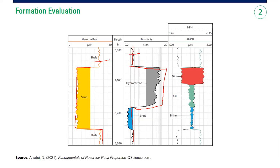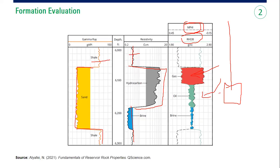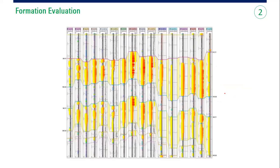To distinguish gas from oil we use the combination of the neutron log and density log. Using those two logs together, we can see that the upper zone is a gas zone — maybe a gas cap — and the lower zone is an oil zone. We usually want to complete our well on the oil zone, so we lower our perforation down to that interval, create holes, and through those holes we produce the oil to the surface.